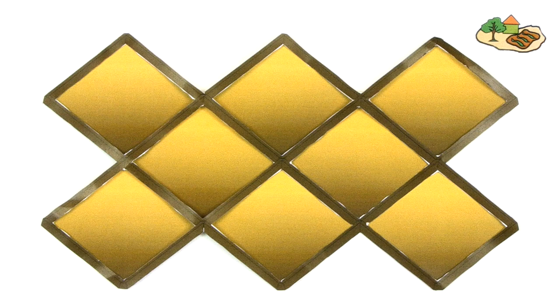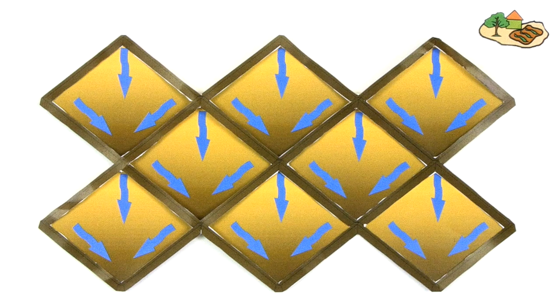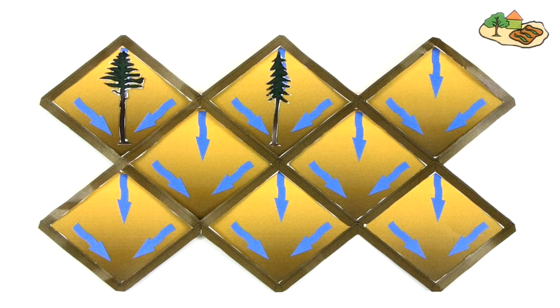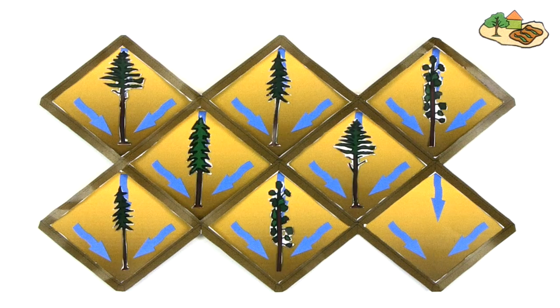Basin systems are closed diamond or square-shaped catchments, surrounded by low-earth bunds. Water falling into this basin is channeled to the lowest point, where ideally food trees are grown.